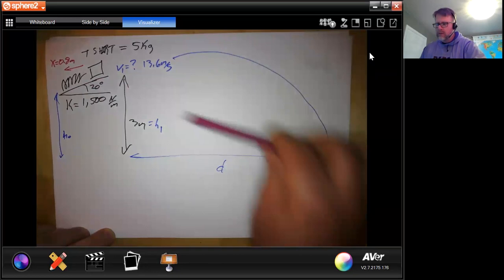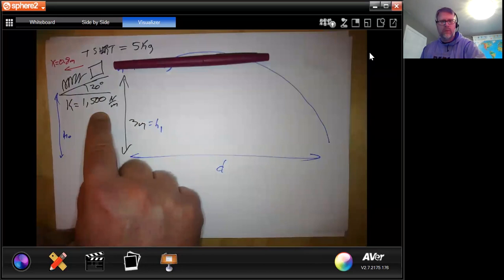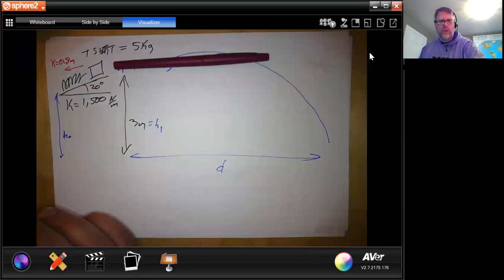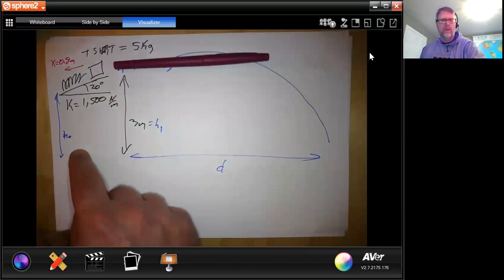So originally when I asked the question, I did not give this velocity. I said we push this spring back 0.8. It has a spring constant which is fairly high, and it shoots a very heavy shirt. The height at the top of the ramp is three meters, which is different than the height at the bottom of the ramp, which is one of the first things I'm going to calculate when I do this.